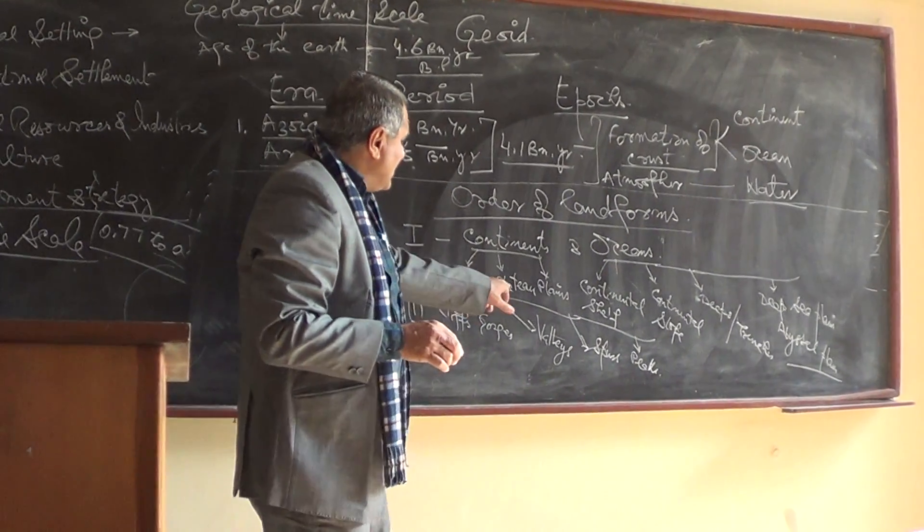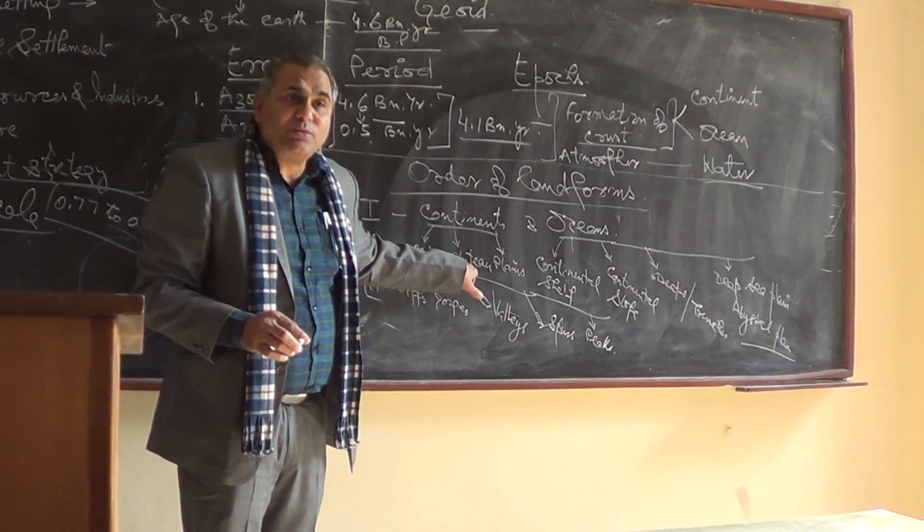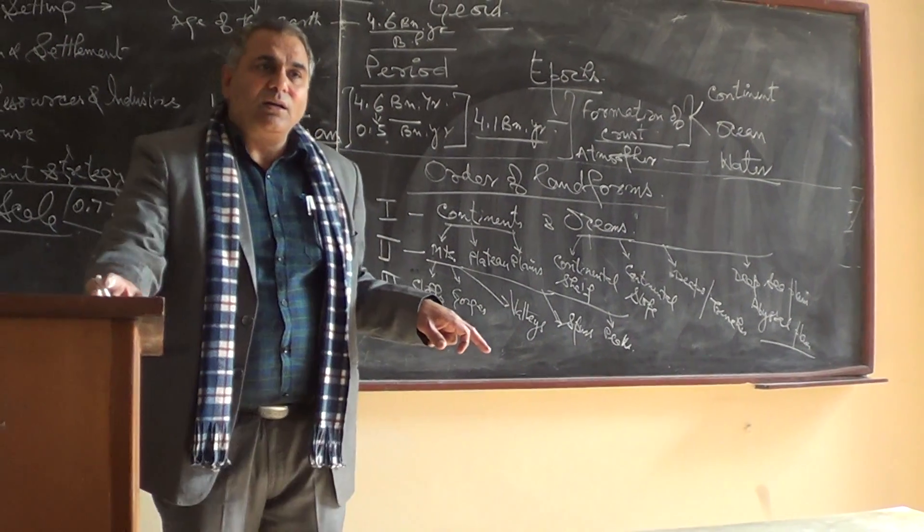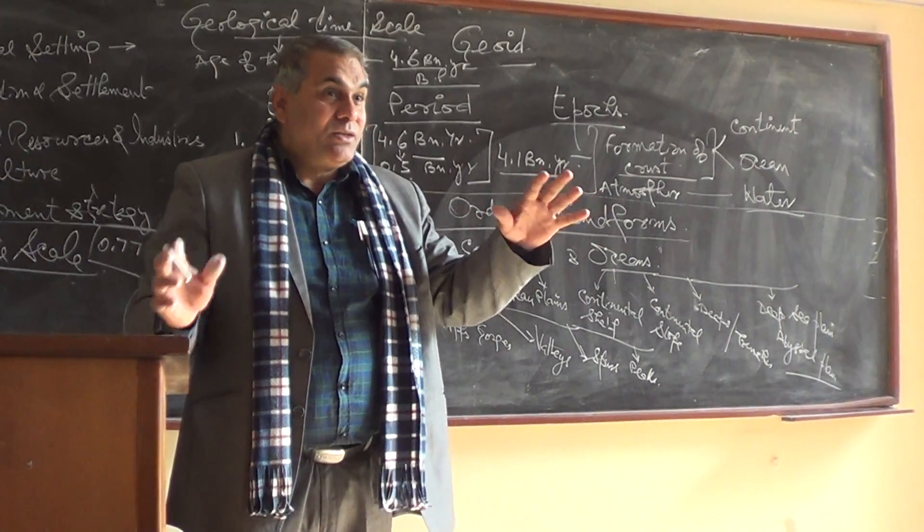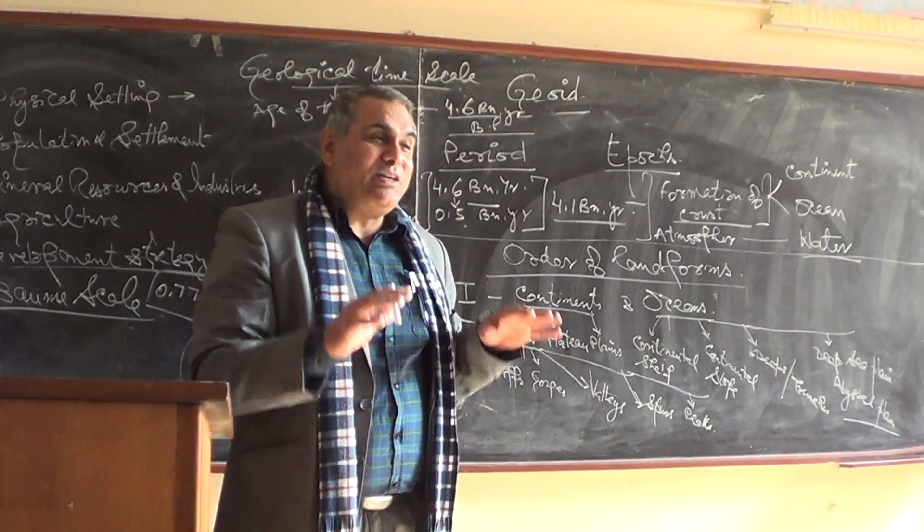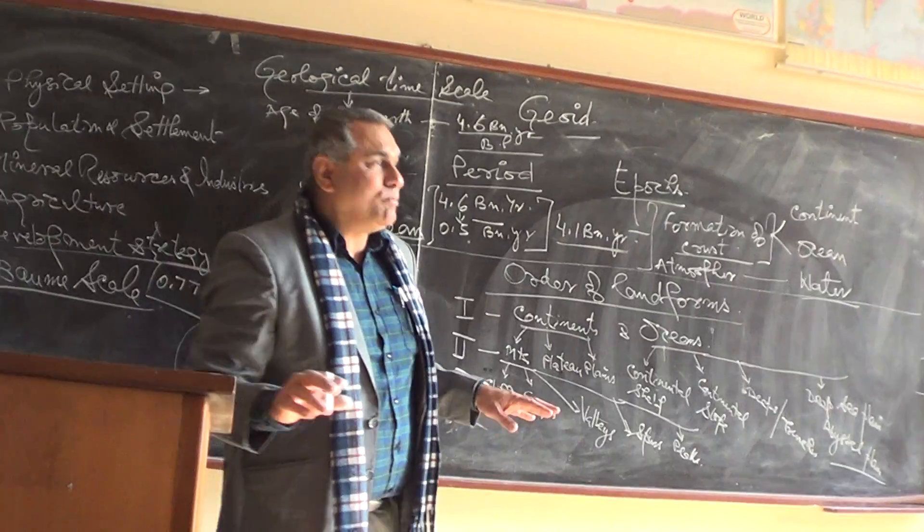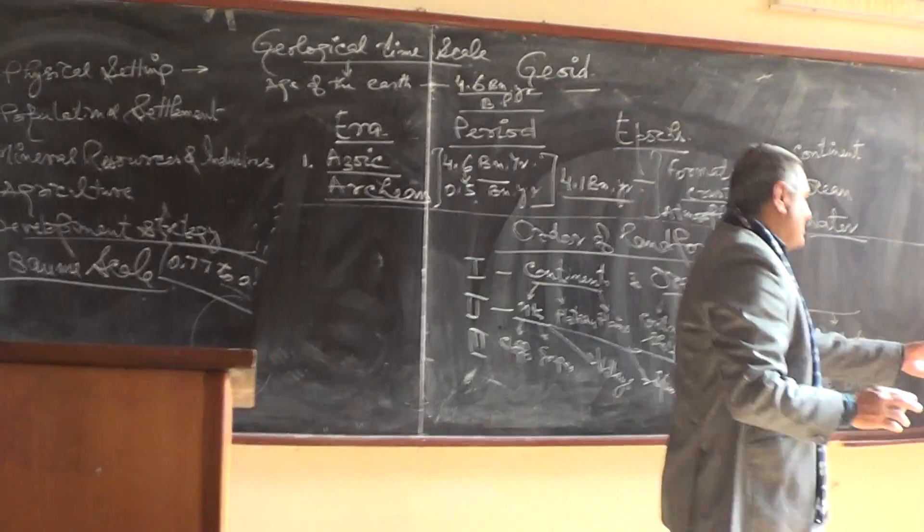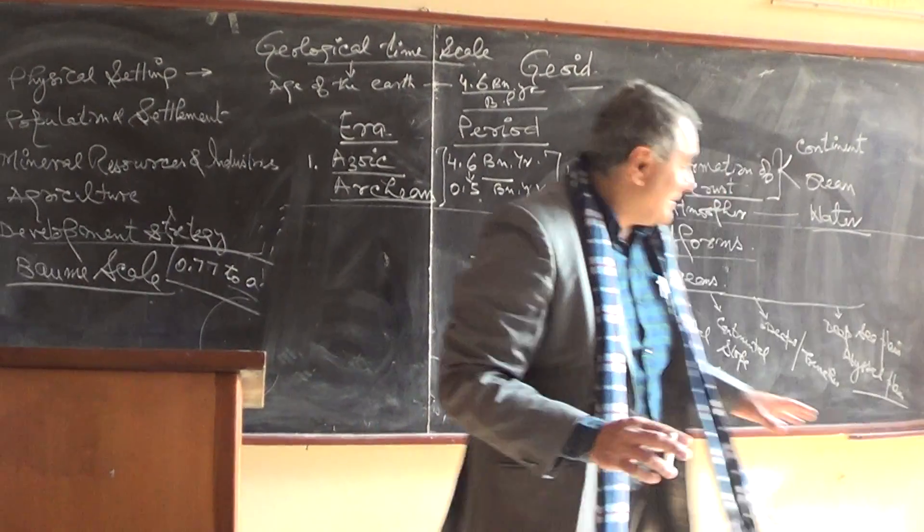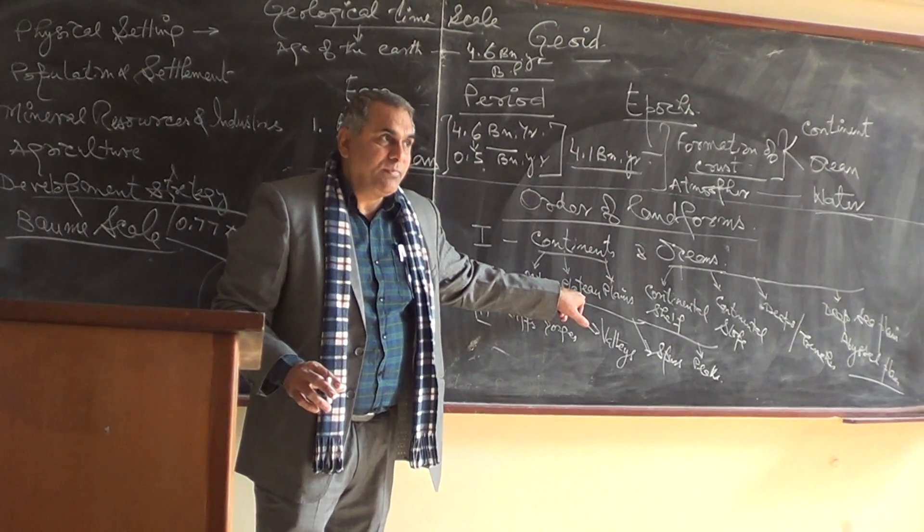Simultaneously in the plateau, we have third order landforms like mesa, butte, wide valley, gentle slope, undulated topography, weird topography, broken landmasses. These are the third order landforms in plateaus.